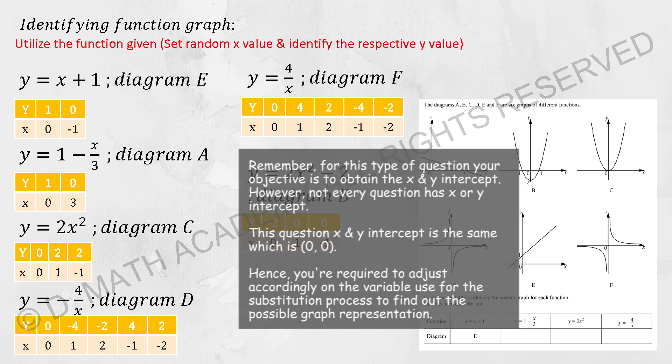For the next one, we have Y equals 2X squared. I set when Y equals 0, when Y equals 2. The possible outcomes would actually be 0, 1, and negative 1. So out of all these graphs here, it will be diagram C that fulfilled the requirement.